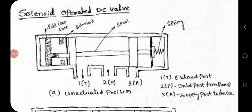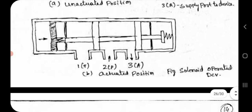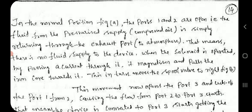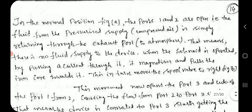Solenoid Operated Direction Control Valve. In the normal position, Figure A, ports 1 and 2 are open — that is, the fluid from the pressurized supply (compressed air) is simply returning through the exhaust port to atmosphere. This means there is no fluid supply to the device.